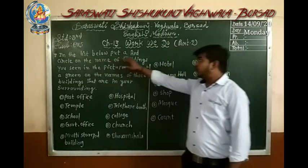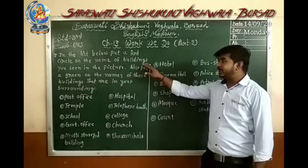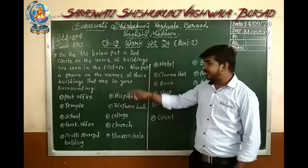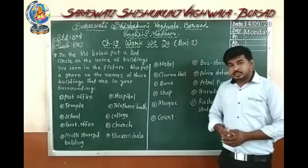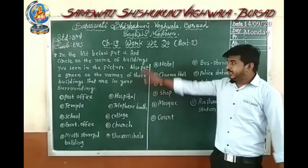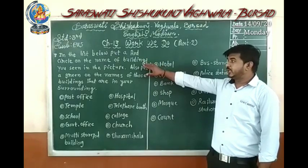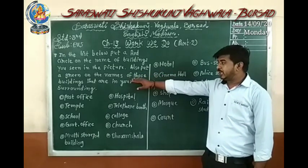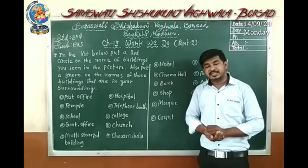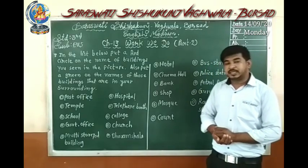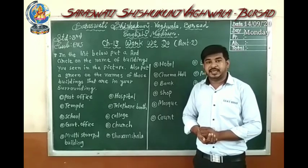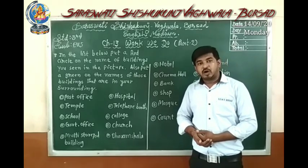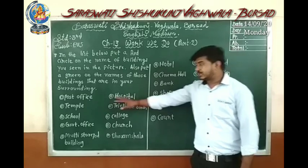Here one exercise is given: put a red circle on the name of buildings you see in the picture. Also put a green circle on the name of those buildings that are in your near surroundings. In the lesson, we have seen one picture on the beginning page. In this picture, we have seen some buildings.